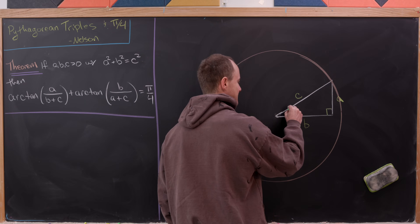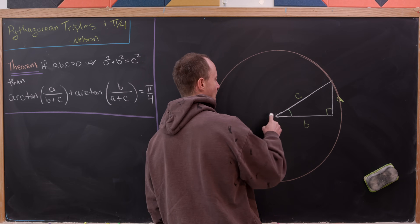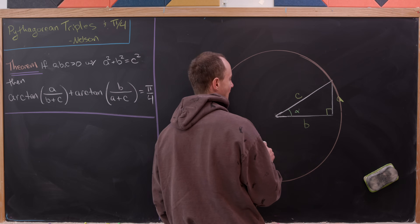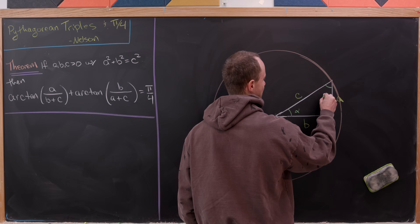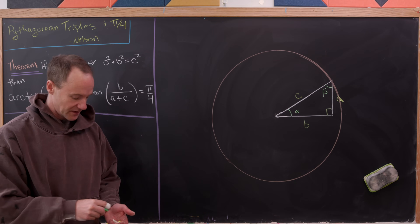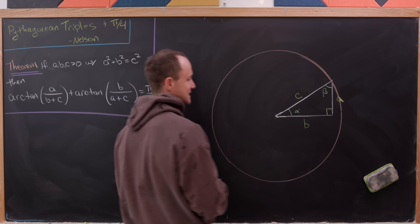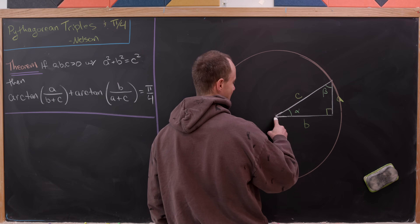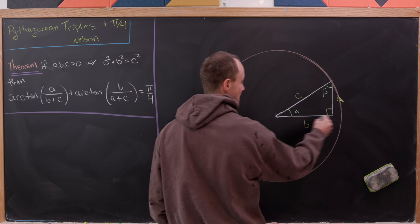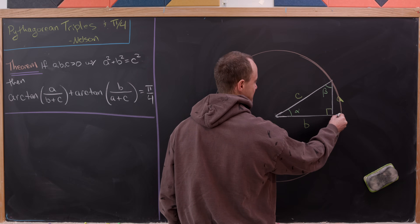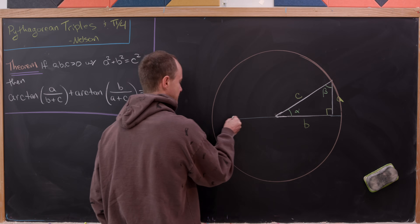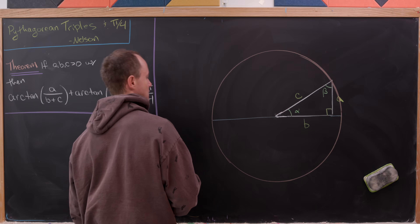Now I'm going to name some of these angles. The angle opposite the side of length a we'll call alpha, and the angle opposite the side of length b we'll call beta. Then I'm going to extend the segment containing the side with length b into a diameter of this circle.